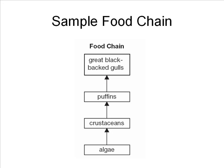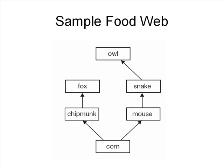Decomposers typically break down all the bodies of these organisms once they die. In the food chain pictured on the screen, algae are the producers. Algae are able to use the energy of the sunlight to make sugar through photosynthesis. The algae are eaten by the primary consumers, or crustaceans in this example. The crustaceans are then eaten by the puffins, and the puffins are then consumed by the great black-backed gulls. The gulls are the tertiary consumers, the puffins are the secondary consumers, the crustaceans are the primary consumers, and the algae are the primary producers.